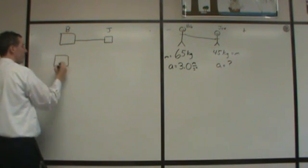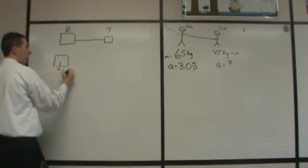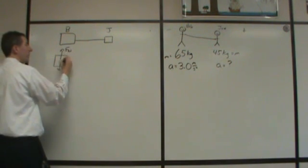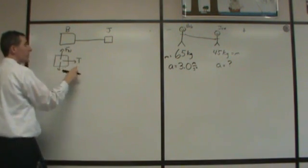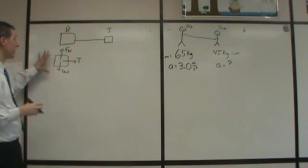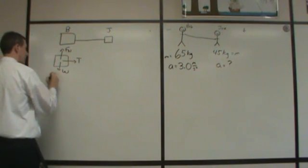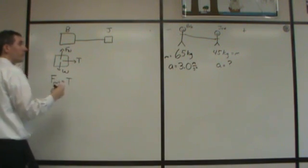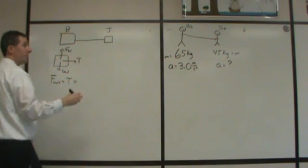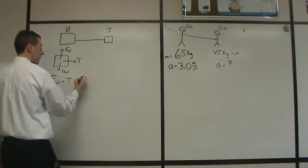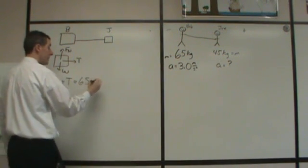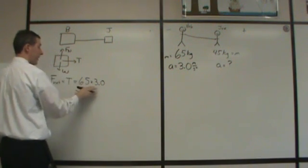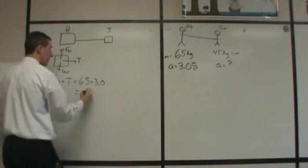If we were to look at just Bob for a moment, there would be a weight force acting down, a normal force acting up, and a tension force from the rope. And these two forces would cancel. In this case, our net force is equal to just that tension. And we can find that by taking the mass of Bob, 65, times the acceleration of 3.0, and that comes out to 195 N.